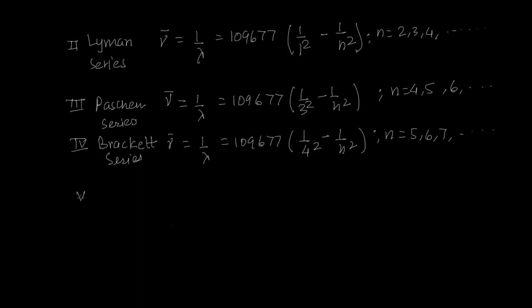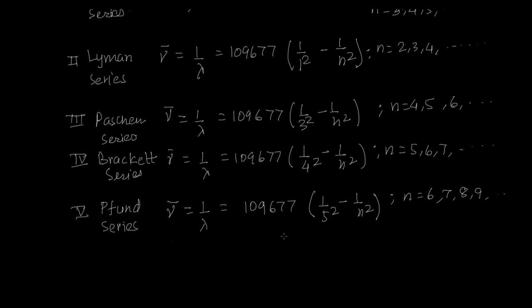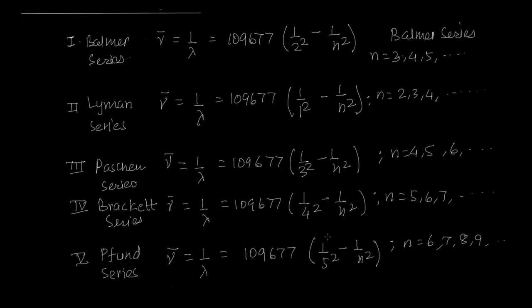And there is a queer name. I don't know how this fellow was named after all. It's perhaps Pfund. I don't know in what part of the world did they use this. Pfund was 109677, 1 upon 5 square minus 1 upon n square, and n will go to 1 higher and so on. And all these units are per centimeter.